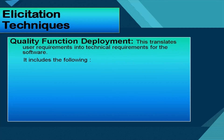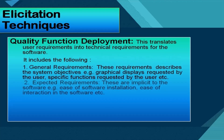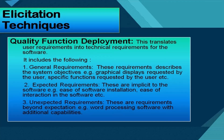Next is quality function deployment. This translates user requirements into technical requirements for the software. It includes three types: general requirements, which describe the system objectives such as graphical displays or specific functions requested by the user; expected requirements, which are implicit requirements of the software such as ease of installation or ease of interaction; and unexpected requirements, which are requirements beyond expectation, for example a word processing software with additional capabilities like page layout.